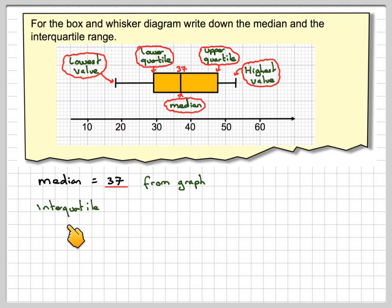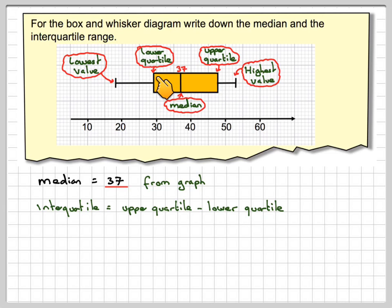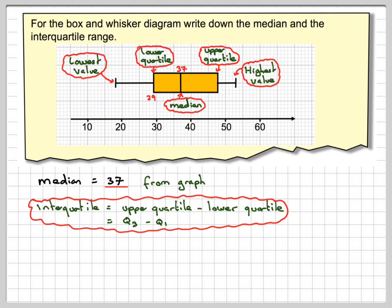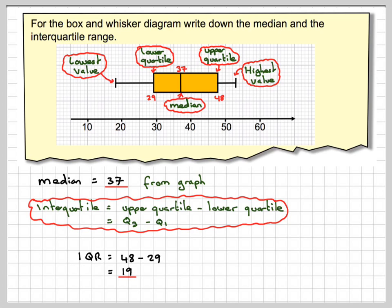Now the interquartile range is the upper quartile minus the lower quartile — that's Q3 minus Q1 — and it is the measurement of the spread. So Q3 is 48 and Q1 is 29. We can verify: that's 48, and if we read off the scale, this is 29. So we need to do 48 minus 29, which is equal to 19.